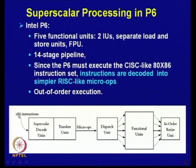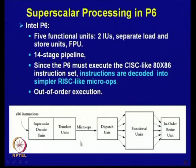This is how the conversion of instructions into micro-operations takes place. The x86 instructions are fed to a superscalar decode unit, then a translate unit. Together they convert x86 instructions into RISC-like micro-operations. These micro-operations are sent to the dispatch unit, which identifies which functional unit each operation should go to.